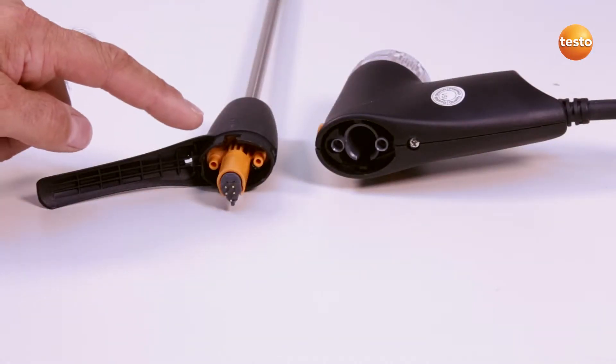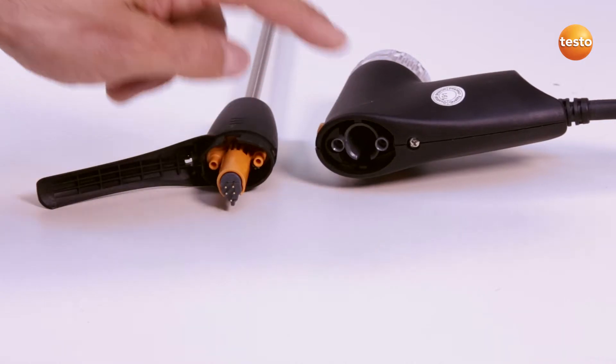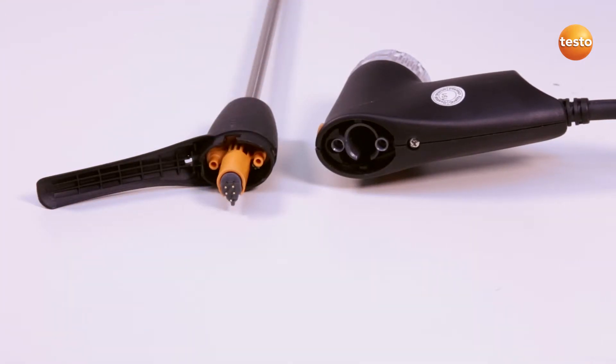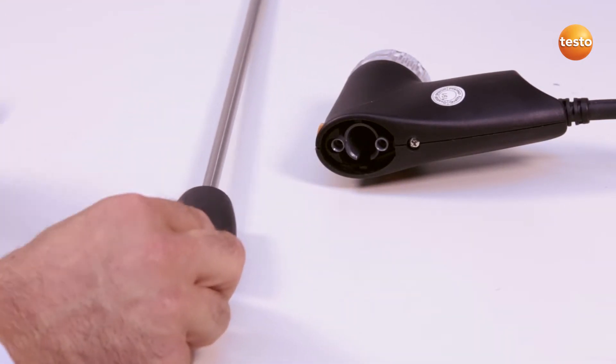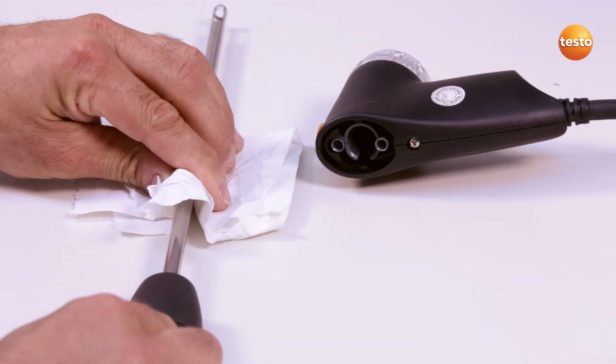The flue gas ducts in the probe shaft and the probe handle can be cleaned out using compressed air. External cleaning is done with a cloth. Brushes should not be used.